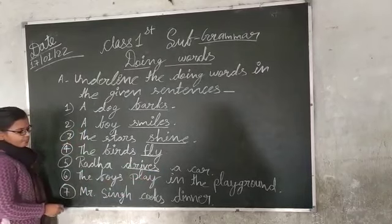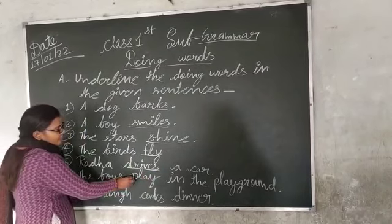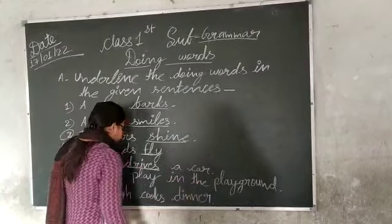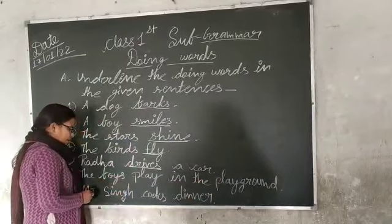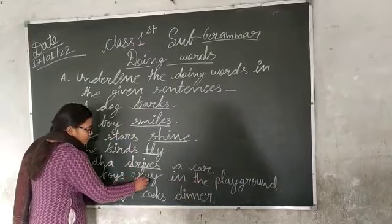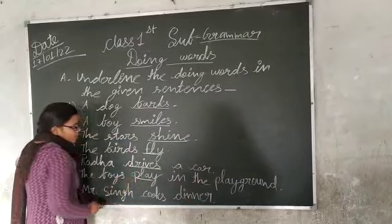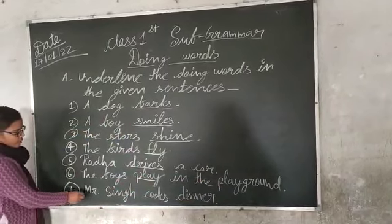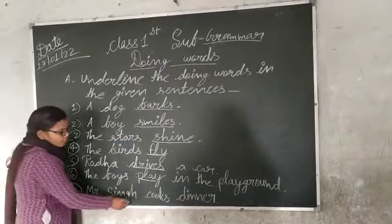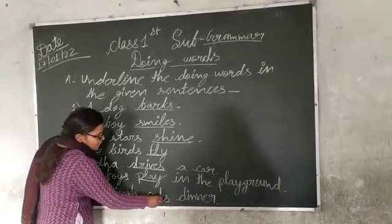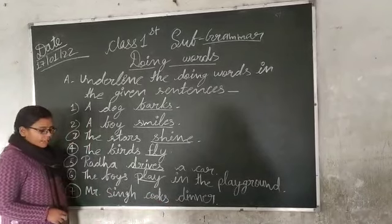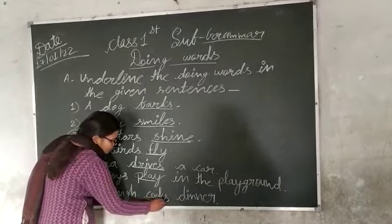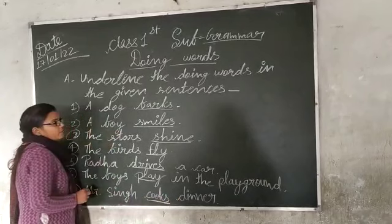The boys play in the playground. Play. In this line, play is a doing word. Mr. Singh cooks dinner. In this line, cook is a doing word.